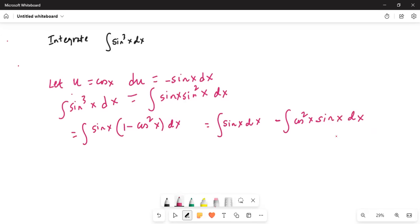Integration of sin x dx is minus cosine x, and this is minus integration of u square. This becomes minus integration of u square, and sin x dx is minus - so these two minuses make it plus. Sin x dx is du.